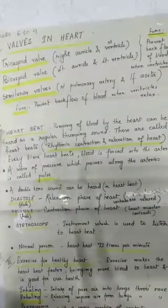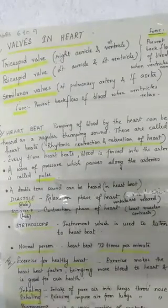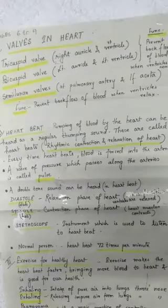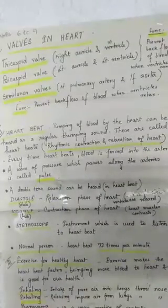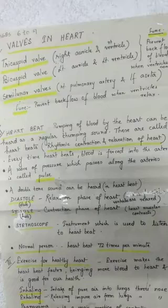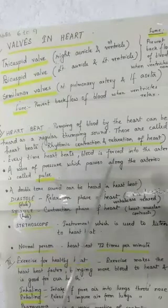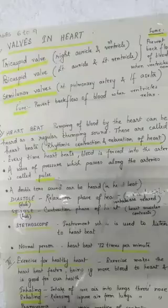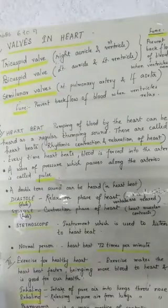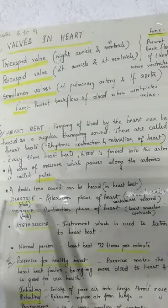What is heartbeat? Heartbeat is the rhythmic contraction and relaxation of the heart. The thumping of blood by the heart can be heard as a regular thumping sound — these are called heartbeats. Every time our heart beats, blood is forced into the arteries. A wave of pressure which passes along the arteries is called pulse. A double tone sound can be heard in a heartbeat: one is 'lub' and another is 'dub'.